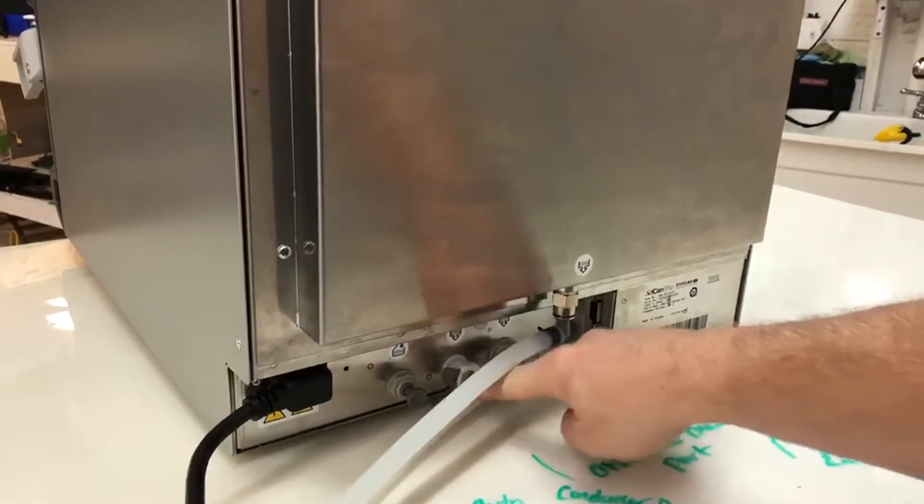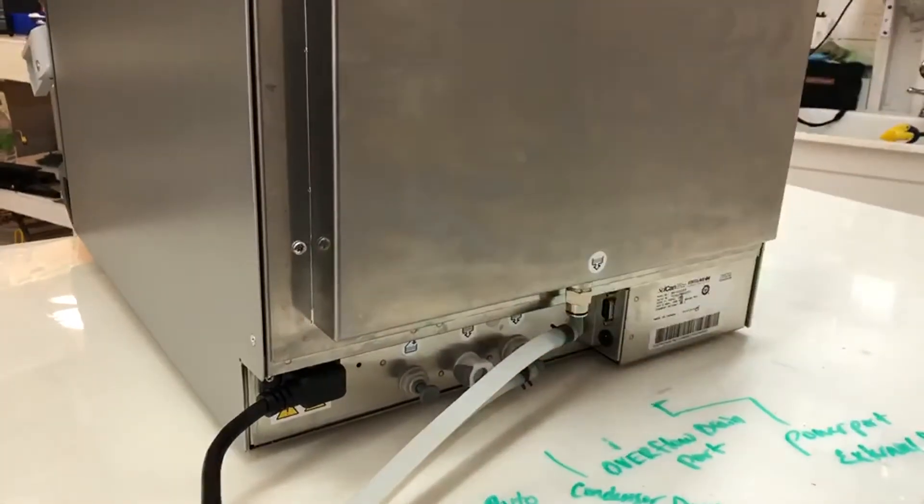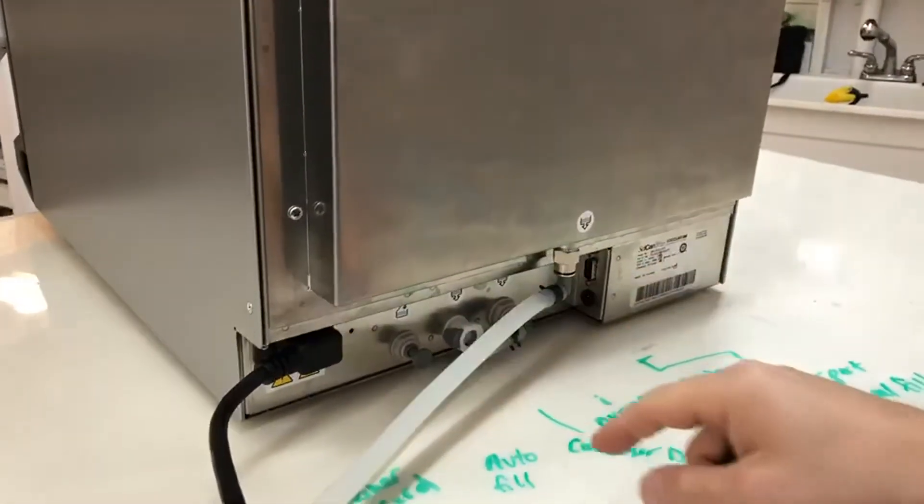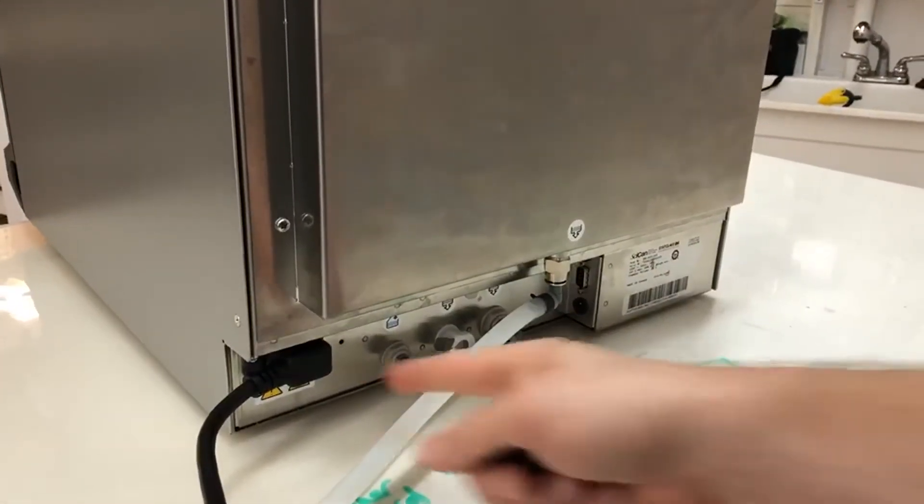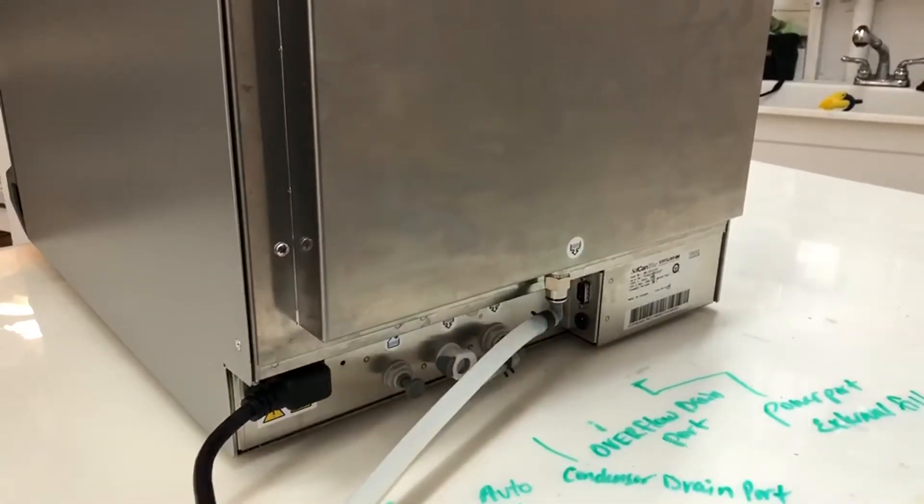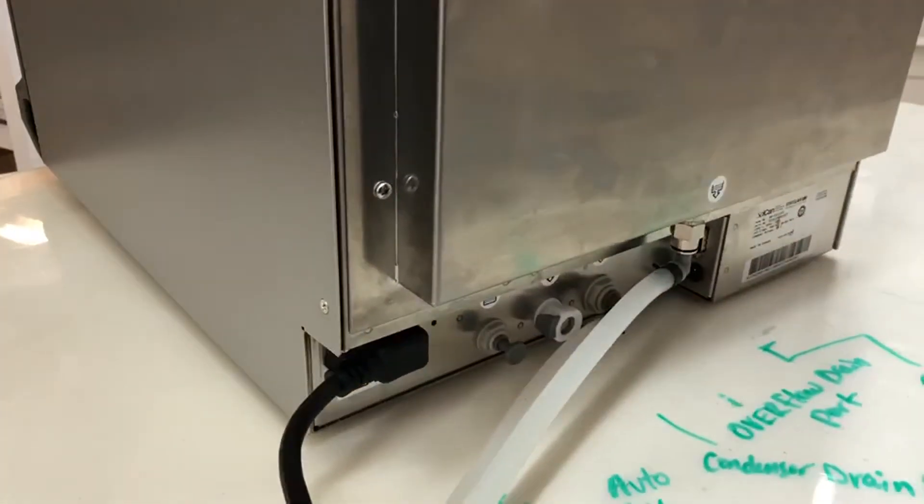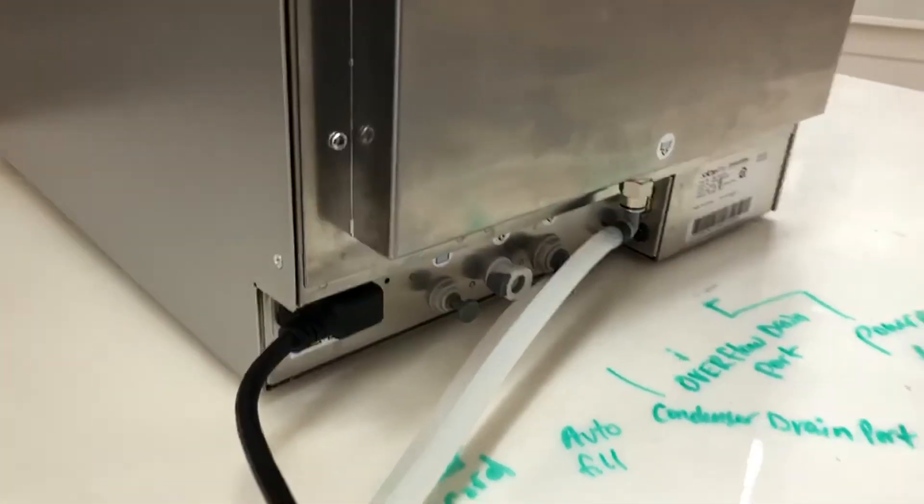This is the overflow for the freshwater tank. There's an autofill option you can do here. And then this is where your power cord is. And then this is an overflow port right here for the venturi. So you're going to want to hook those tubes up. Let's go back to the front.